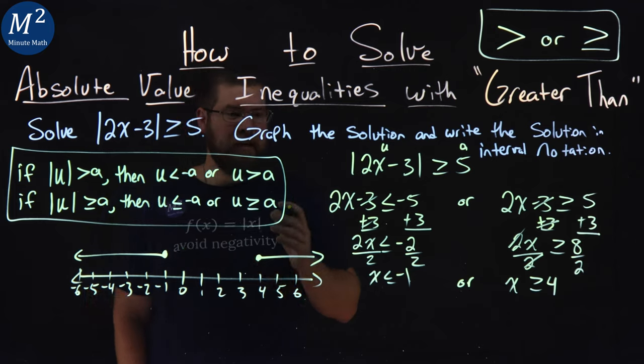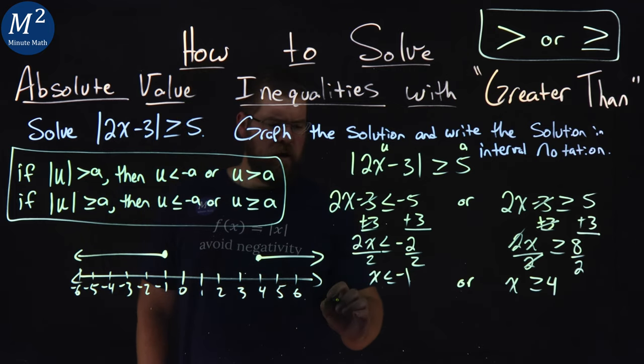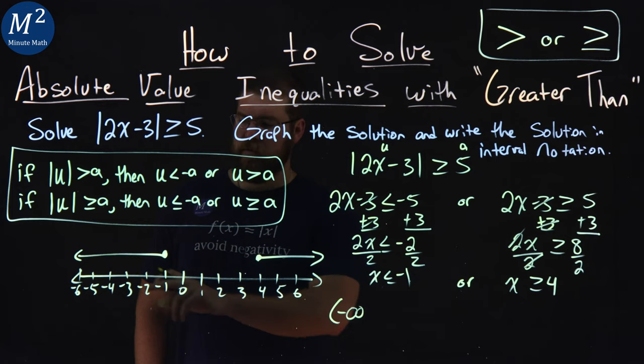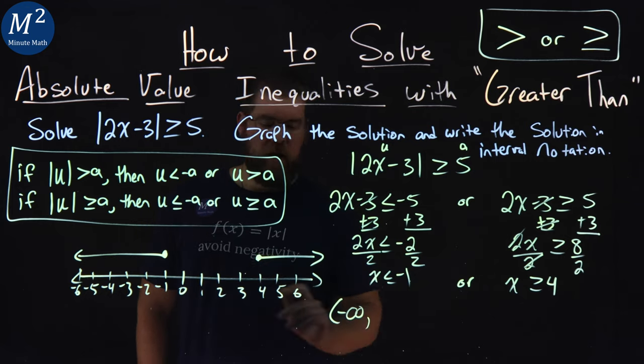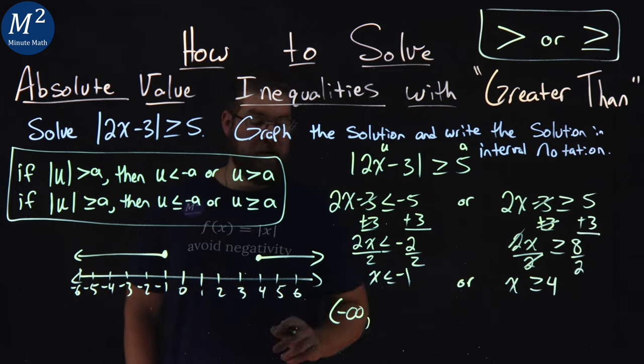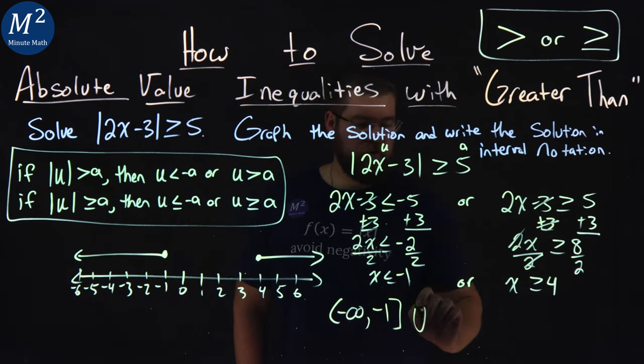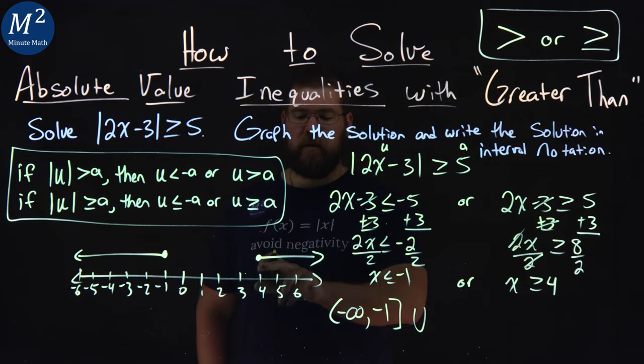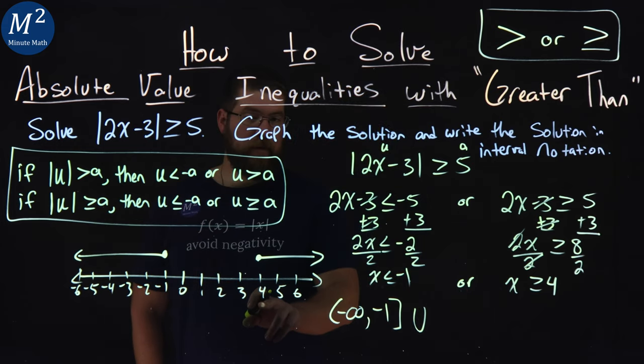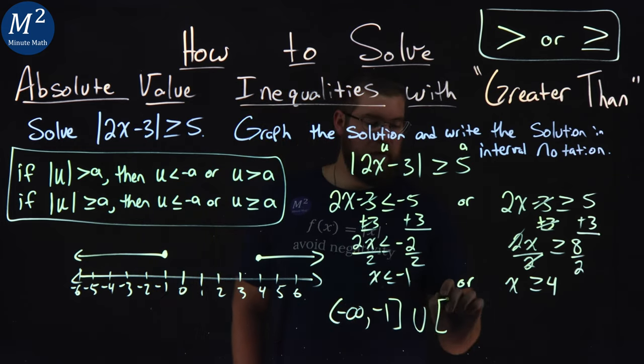Now we need to write our solution in interval notation. The lowest value here is negative infinity. We can go all the way to negative infinity, and we go all the way up to negative 1, but we can equal negative 1, so we put a bracket there. Put a union because we have two separate ones here. Our next value is positive 4. We can equal that, so we put a bracket here, 4...